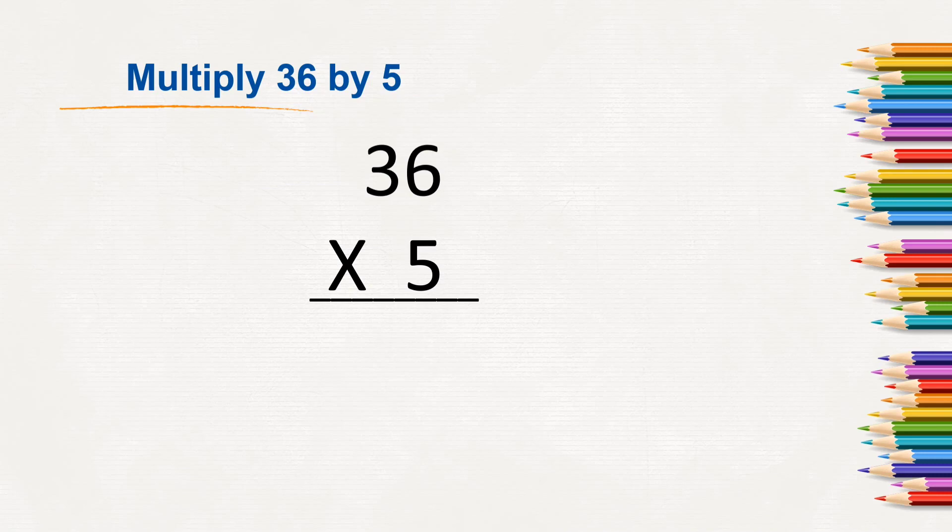We will always multiply the multiplicand by multiplier. What is 5 times 6? 5 times 6 is 30. We will carry 0 here and we will carry 3 to next place value as we do in addition.